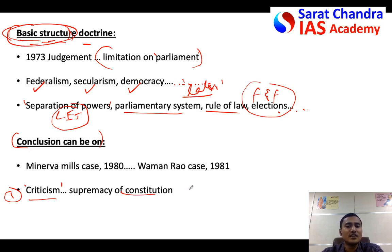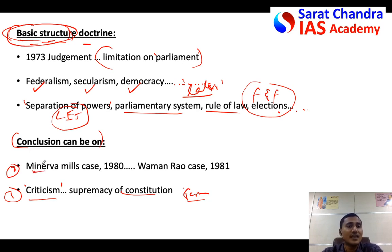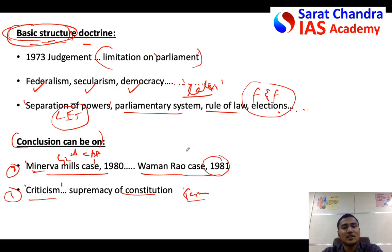In fact, even Germany, after Nazism, mentioned a similar kind of basic structure doctrine wherein the government of Germany cannot remove the basic principles of its constitution. Another way to conclude is to mention that the basic structure doctrine propounded in the Kesavananda Bharati case was later upheld again and again in other cases — for example, the Minerva Mills case challenging the 42nd Constitutional Amendment Act, and the Waman Rao case in 1981, where the Supreme Court once again upheld the basic structure doctrine.